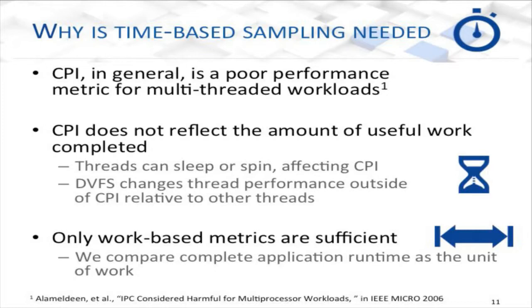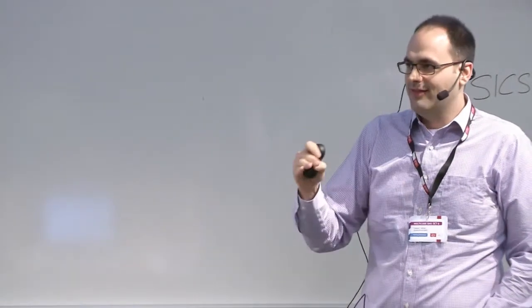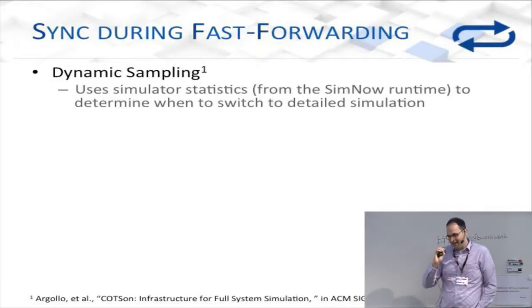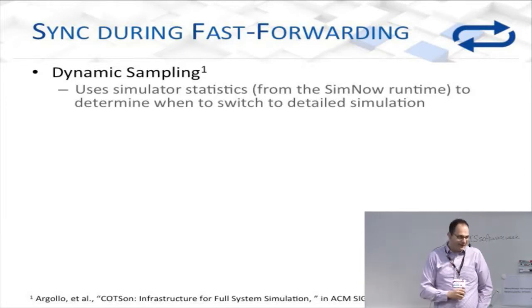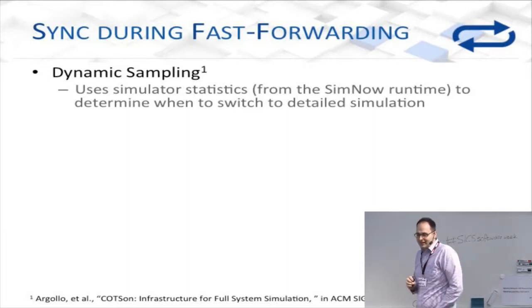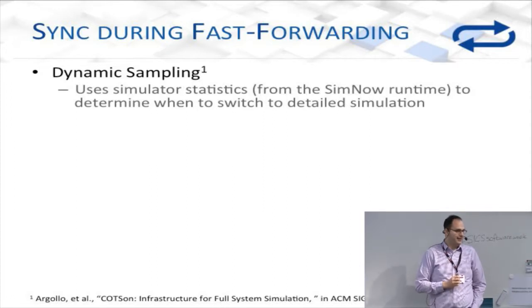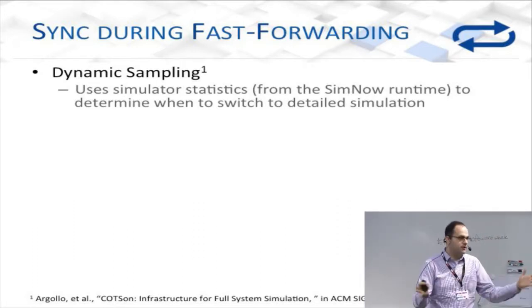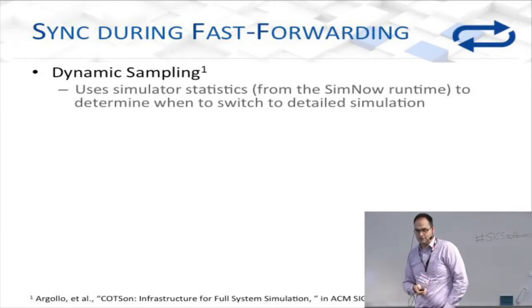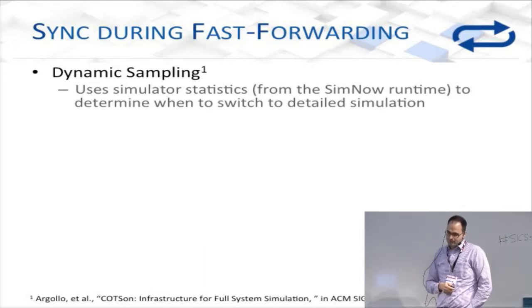One conclusion from our work is that you need a work-based metric — in this case, the runtime of the entire application. This is how you judge the amount of work being done, and it eliminates problems with spin loops. Regarding synchronizing during fast-forwarding: there was an interesting paper that used information from a JIT running a microarchitectural simulator, monitoring the JIT to detect changes in application behavior. But one trade-off was they could no longer synchronize during fast-forward periods, so threads proceeded at different rates on different cores. This actually led to significant runtime prediction errors.